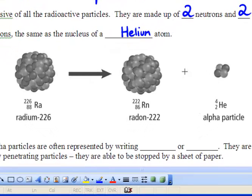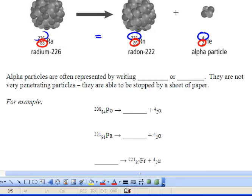So, check out this picture. We have radium-226. And when we have alpha decay, we get radon-222 plus an alpha particle. Now, what's really cool about this is you're going to notice that if we put this equal, we've got 226 right here and we've got 222 plus 4. You'll notice that 4 plus 222 equals 226. And if we look over here, we've got 2 and 86. Well, put those two together and they equal 88. This is all about the law of conservation of mass. Alpha particles are often represented by writing as a 4 and a 2 with an alpha symbol or a 4 and a 2 as a helium atom. They're not very penetrating particles and they're able to be stopped by a piece of paper.